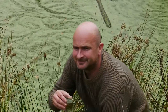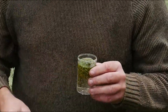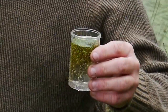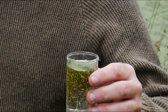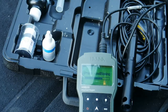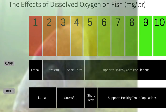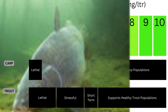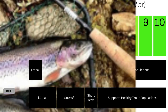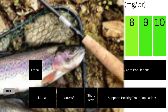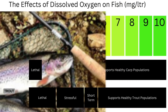Each time I take a reading, I will use the same locations, so I can see changes that occur over time. The level of oxygen dissolved into water is very small — around 5mg per litre is recommended for optimum fish health, however some species require more oxygen than others.